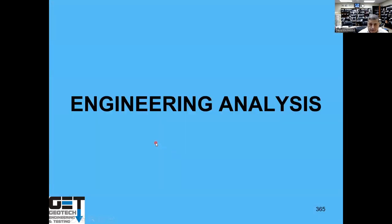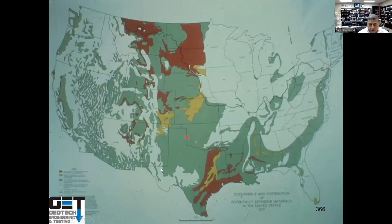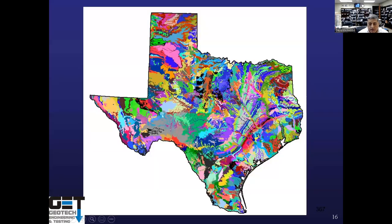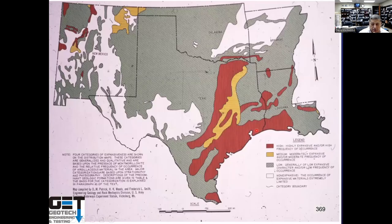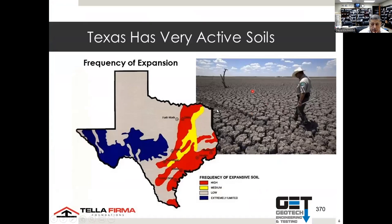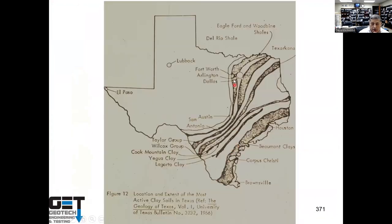So we look at the whole area to determine what kind of soils we have. You look at the geologic map — in Texas we have a lot of expansive soils. This is the US map showing soils that expand to about 1,500%. You see a lot of expansive soils in Texas and Louisiana. Houston, Dallas, San Antonio, and Austin all have expansive soils you've got to design for.